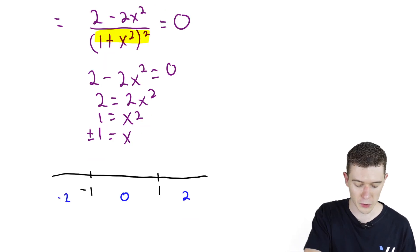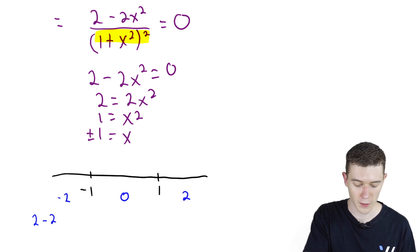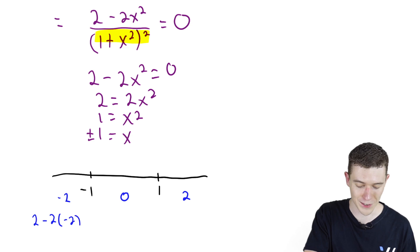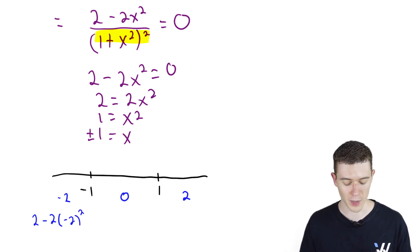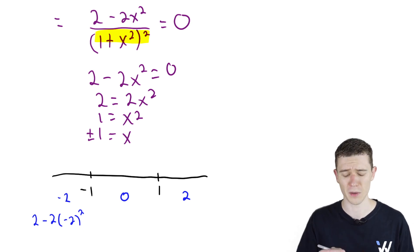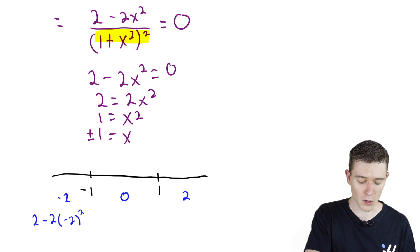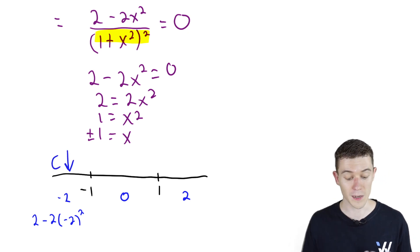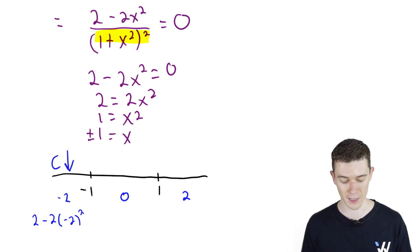If we substitute negative 2 into the numerator of our second derivative: 2 minus 2 times (−2) squared. Negative 2 squared is 4, times 2 is 8, so 2 minus 8 is negative. That means our function is concave down on the interval from negative infinity to negative 1.